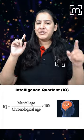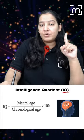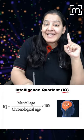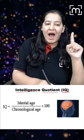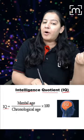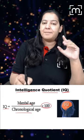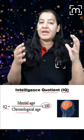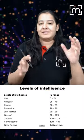Hello everyone. Do you know what is IQ? That is Intelligence Quotient. IQ is mental age upon chronological age into 100. By this formula you can calculate the IQ of a person.